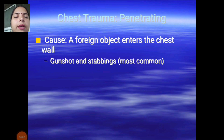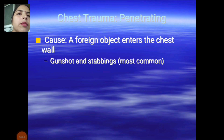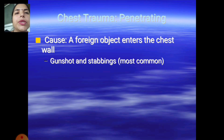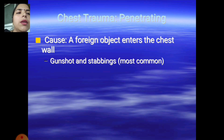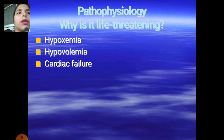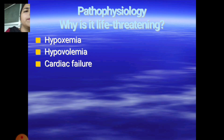Hello everyone, myself Himani Sharma from RPIIT campus. In today's class I discuss chest trauma — penetrating causes. If a foreign object enters the chest wall, such as a gunshot or stabbing, the most common pathophysiology includes hypoxemia, hypovolemia, and cardiac failure.